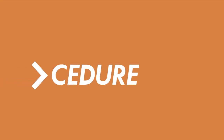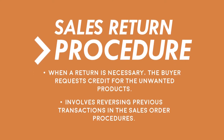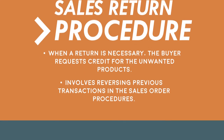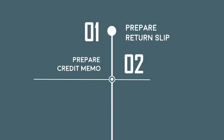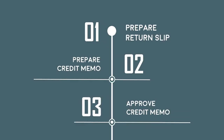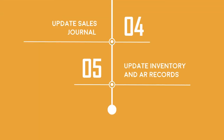Sales return procedures: when a return is necessary, the buyer requests credit for the unwanted products. It involves reversing previous transactions into sales order procedures. It has six steps: preparing the return slip, preparing the credit memo, approving the credit memo, updating the sales journal, and updating inventory and AR records.